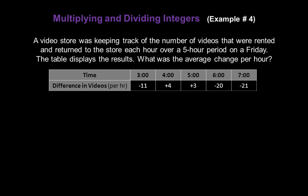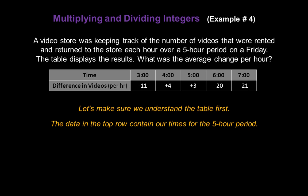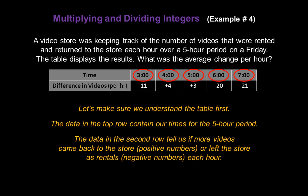Finally, let's look at a word problem. A video store was keeping track of the number of videos that were rented and returned to the store each hour over a five-hour period on a Friday. The table displays those results. What was the average change per hour? We need to understand what the table is telling us. The top row shows times from 3 o'clock until 7. The second row shows whether more videos came back to the store — positive numbers — or left as rentals — negative numbers — for each of those five hours.